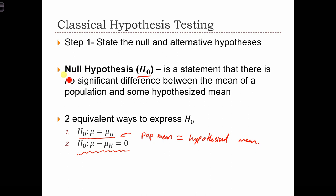Okay, so the null hypothesis for a one-sample difference of means test, which is what we're covering today, is always going to have this form. The population mean equals some hypothesized value.